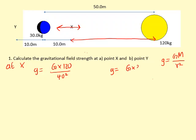...times the mass of the blue planet, because that's the thing that's doing the pulling, over the distance from X to the center of that squared—this distance here—10².